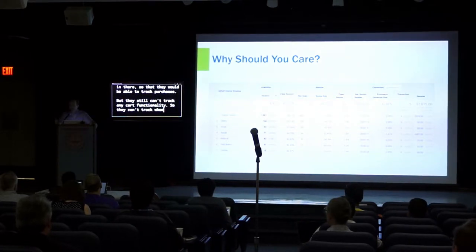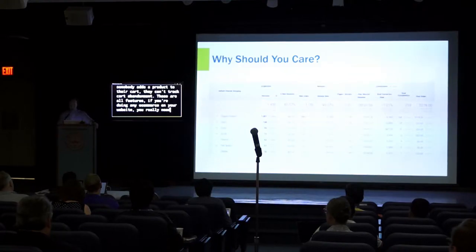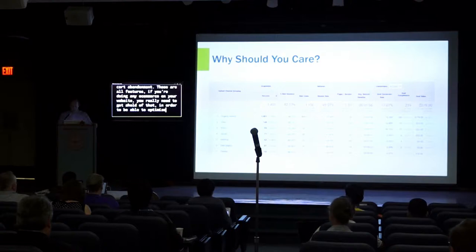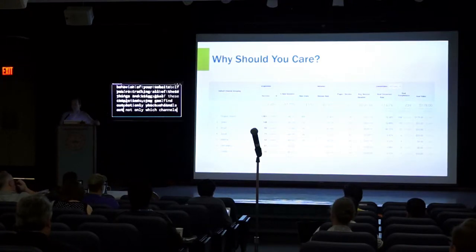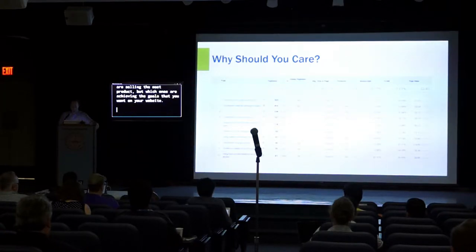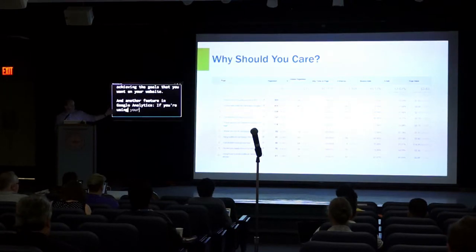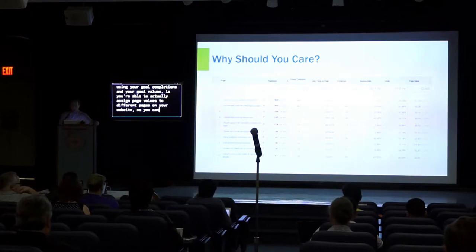They can't track when somebody adds a product to their cart. They can't track cart abandonment. Those are all features you really need if you're doing any e-commerce, in order to optimize the behavior of your website. If you're tracking all of these things and using goal completions, you can find out not only which channels are selling the most product, but which ones are achieving the goals you want. Using goal completions and goal values, you're able to assign page values to different pages on your website to find out which ones are most valuable.